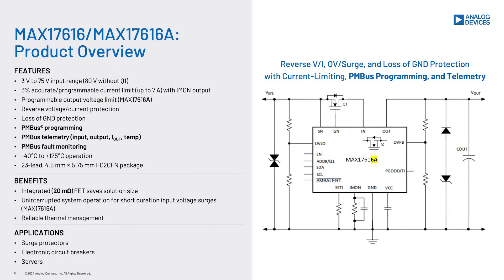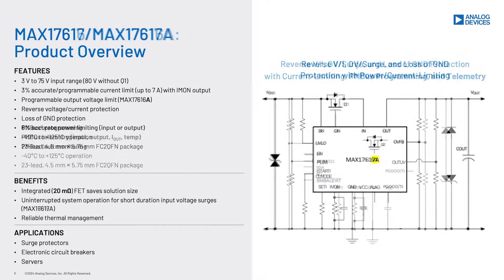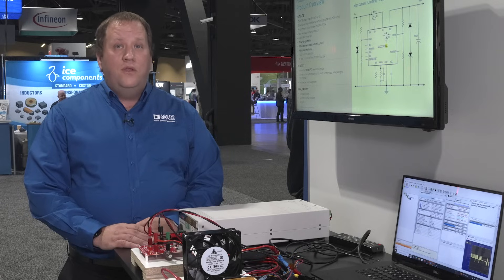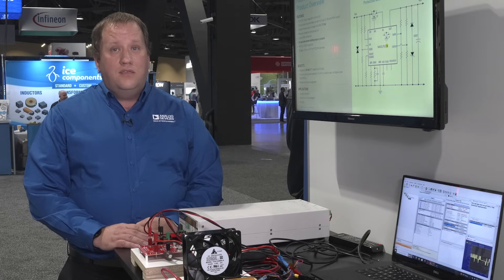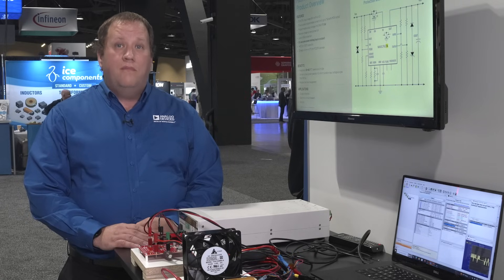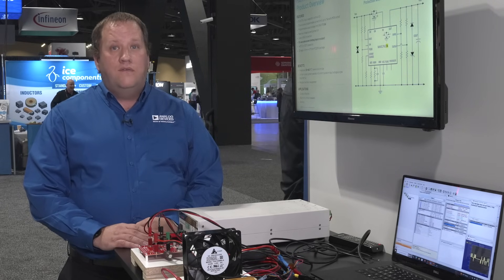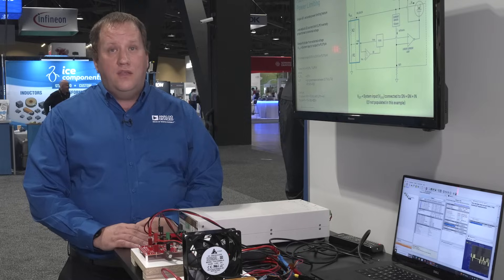E-fuse products like the MAX17616 and MAX17617 provide a great solution for protection needs. Between the four variations — MAX17616, MAX17616A, MAX17617, and MAX17617A — there is broad coverage for various use cases.